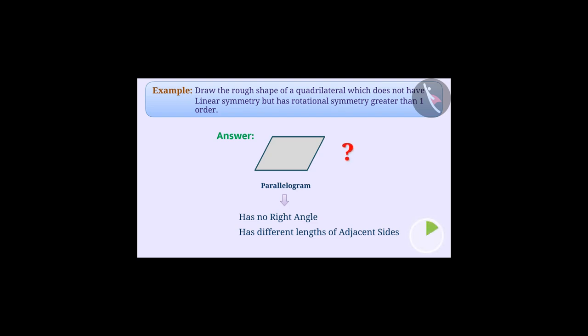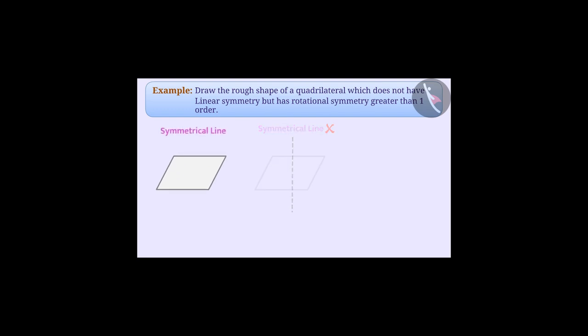Let us tell you. This is a quadrilateral in which we cannot draw any symmetrical line. That is, it does not have linear symmetry. But if it is rotated around the centre at angles of 180 degrees and 360 degrees, we see the same shape as before.